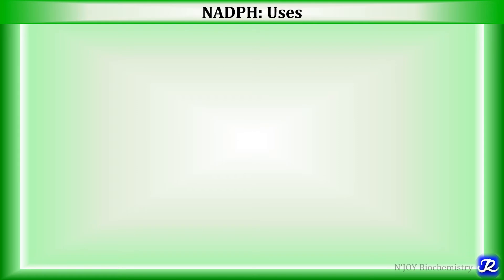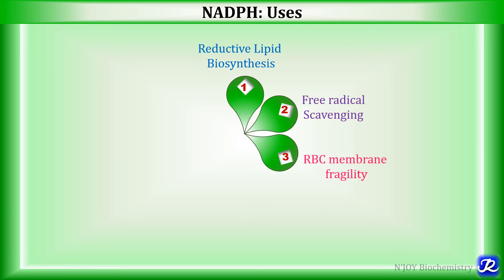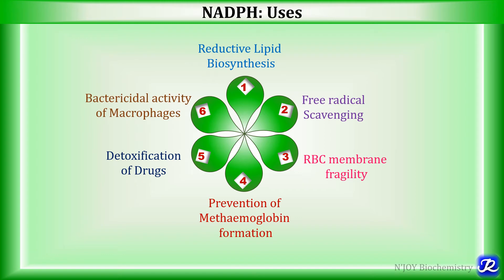NADPH plays a very important role in various reactions in the body. The first important function is its role in reductive lipid biosynthesis — it is involved in the synthesis of fatty acids, cholesterol, steroids, neurotransmitters, and various steroid hormones. It is also important in free radical scavenging, maintaining RBC membrane integrity, prevention of methemoglobin formation, detoxification of drugs, and bactericidal activity of macrophages.